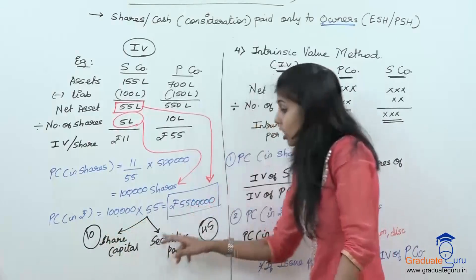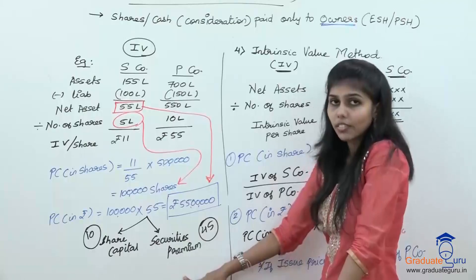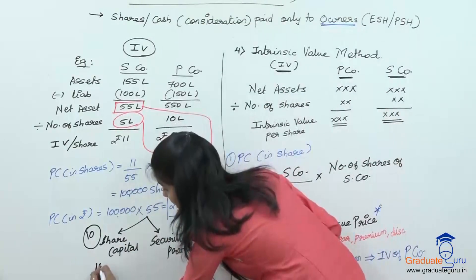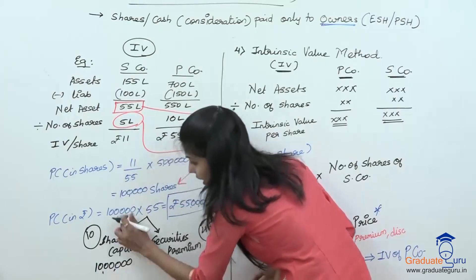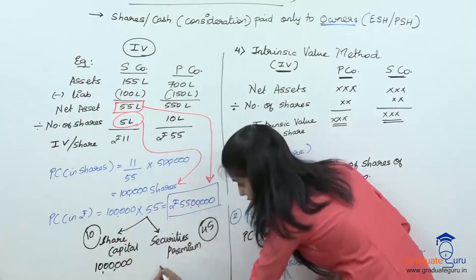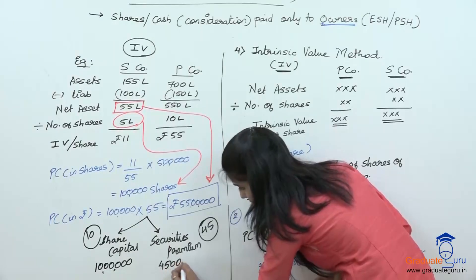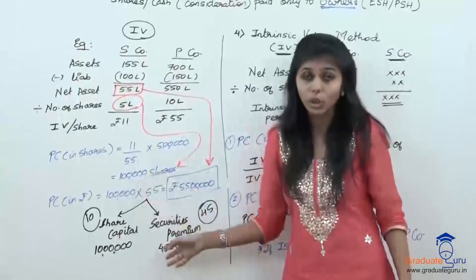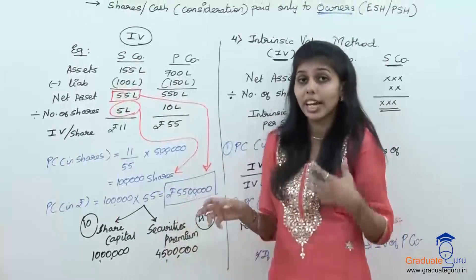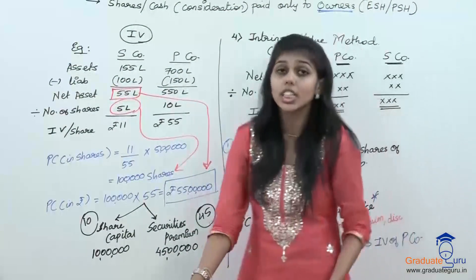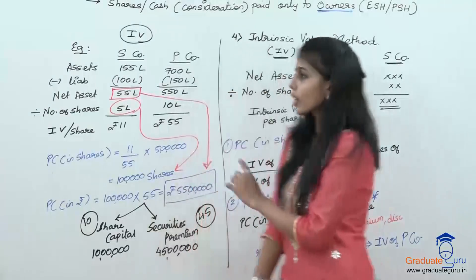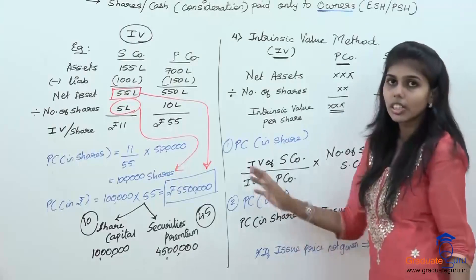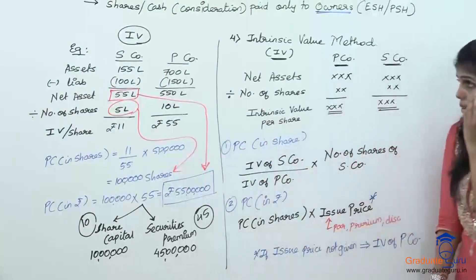1 lakh into 45 = 45 lakhs — yeh samjha. This would be 10 lakhs: 1 lakh into 10. And 1 lakh shares into 45 is 45 lakhs — total comes to 55 lakhs. Yeh samjha. Chalo yeh copy karo — ismein bahut saare logon ko problem hota hai. IV calculate karna koi difficult nahi hai — simply yeh 2 steps follow karo aur aapka easily PC aa jayega.